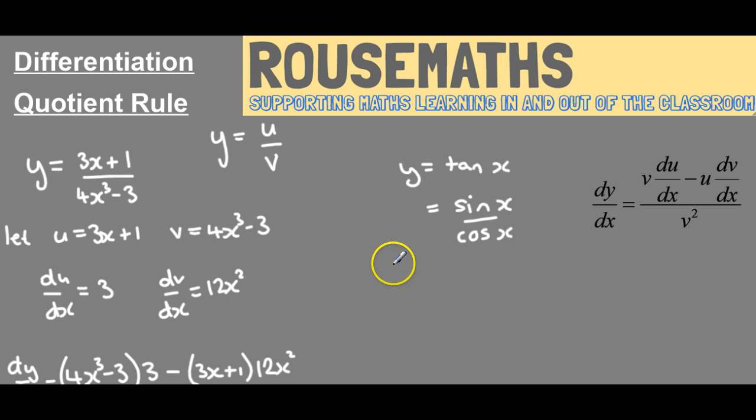So if we're going to differentiate this our u is going to be sin x, so we're going to find out du/dx the derivative of sin is cos and dv/dx the derivative of cos is minus sin.